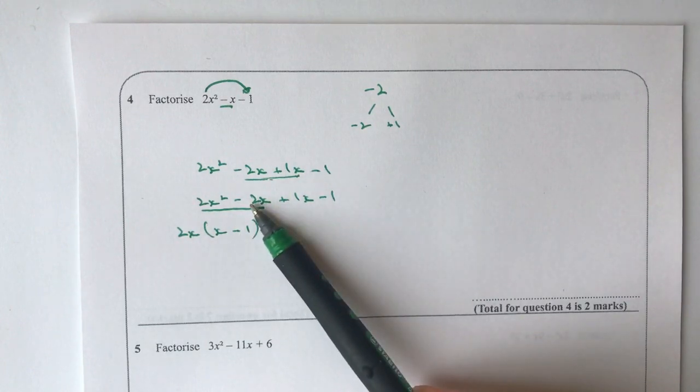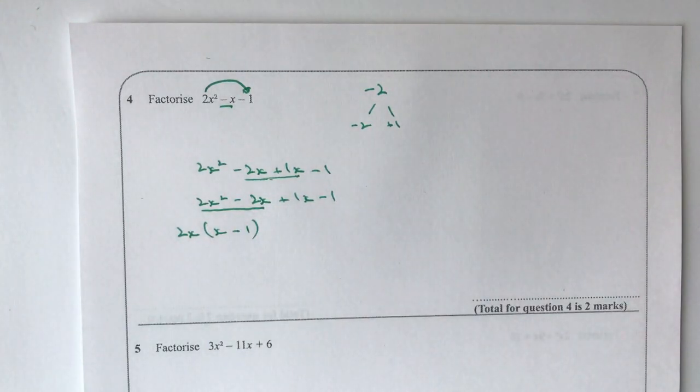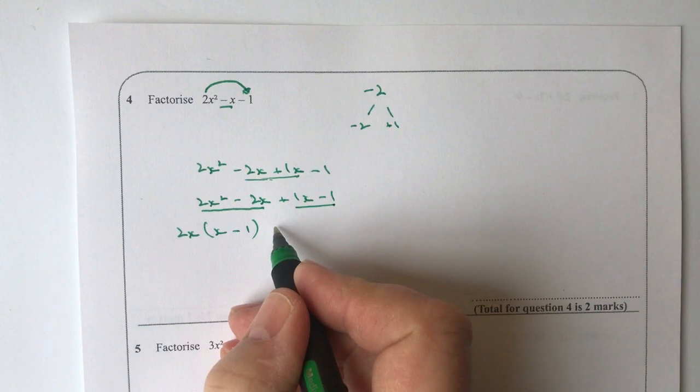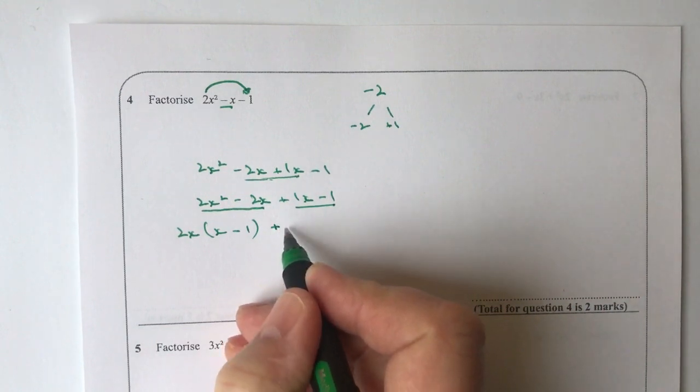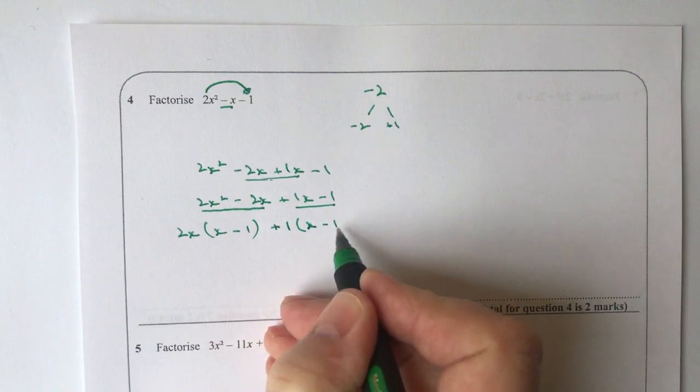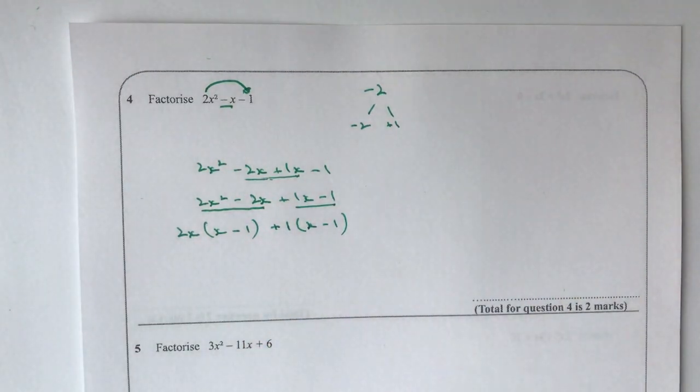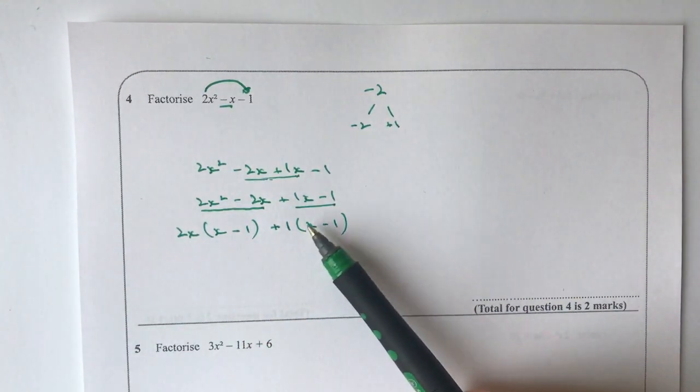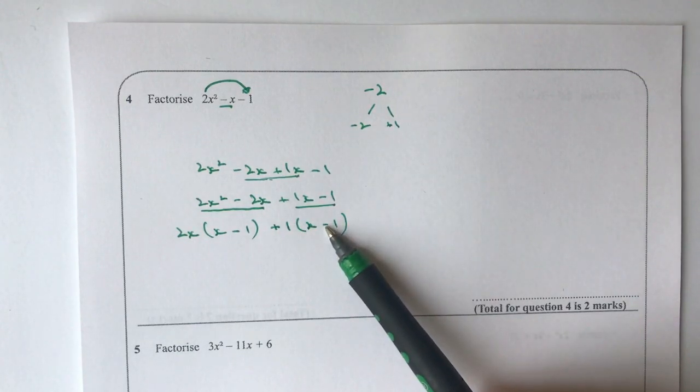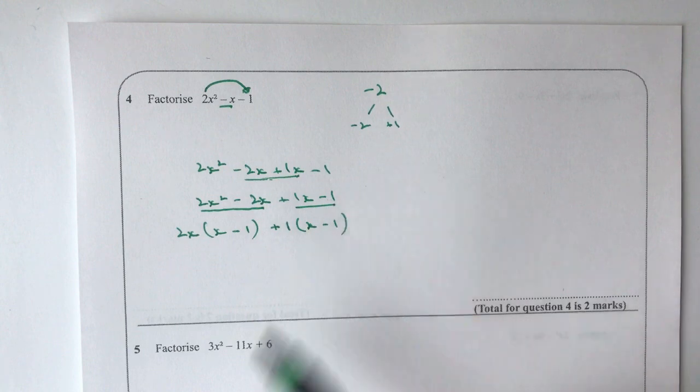Let's do exactly the same exercise now with the second two terms. So with the second two terms I'm going to factorise those for plus 1, because if I do that I end up with x minus 1, because 1 times x is plus 1x and 1 times minus 1 is minus 1.